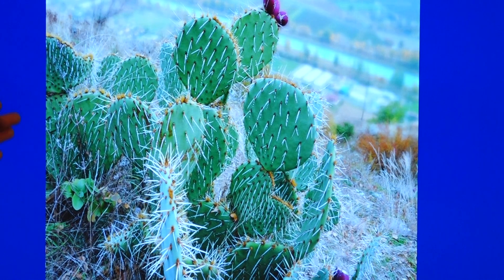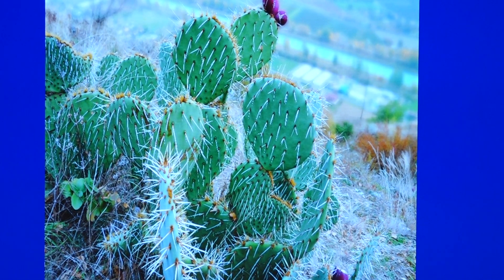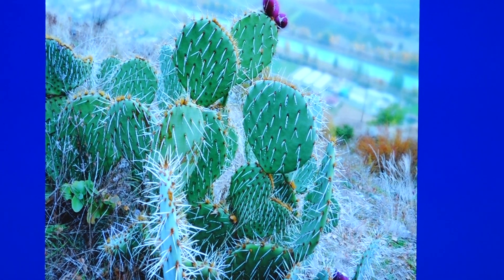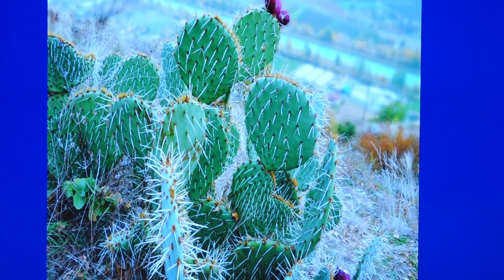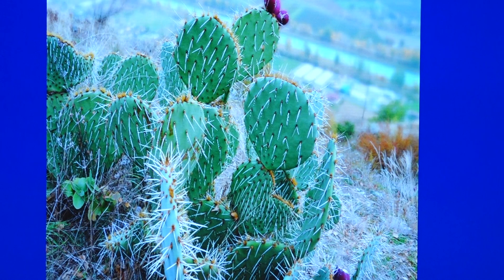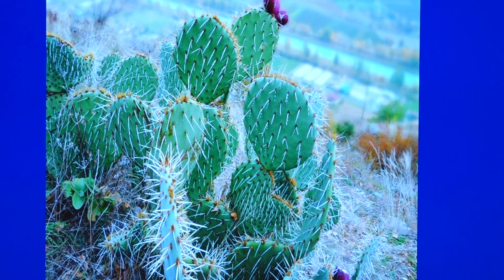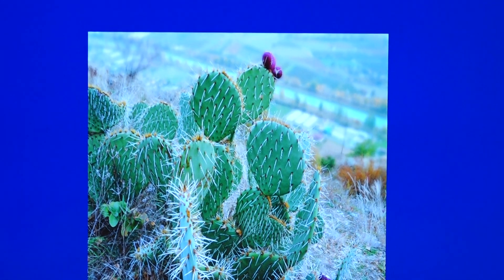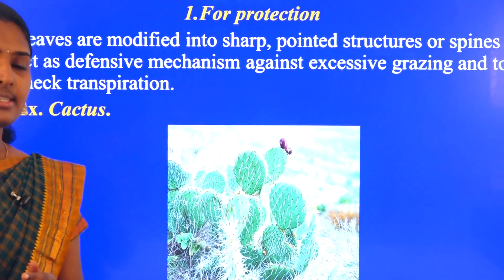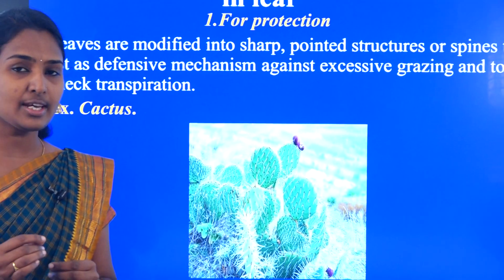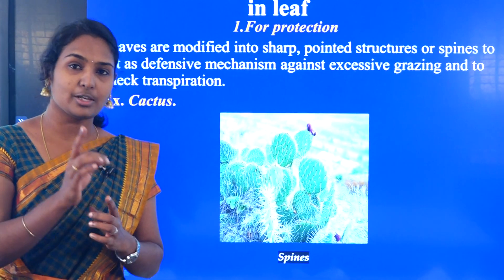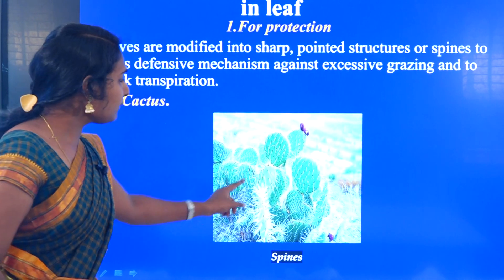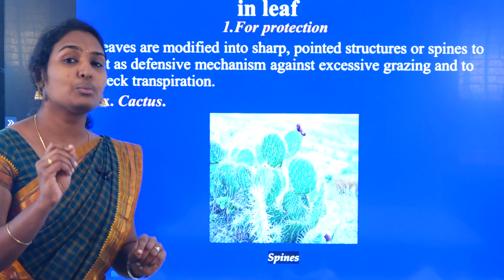We already know that cactus plants are mainly present in desert conditions. In the desert condition, water availability is less. If there is excess transpiration — transpiration means loss of water — then the plant will lose water and dehydration will start. So to minimize the transpiration rate, there will be a modification in the leaf, modified into spines.